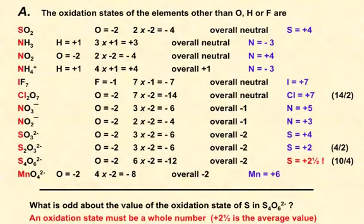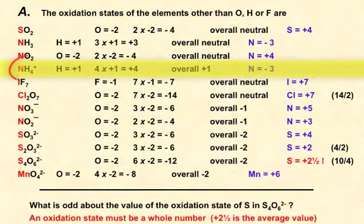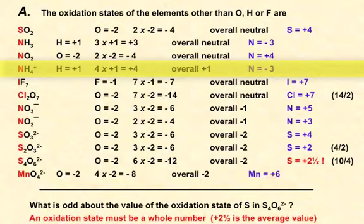For NH4 plus: four hydrogens give a total of plus four for H. If there were no overall charge, nitrogen would be minus four to balance, but we need an overall charge of plus one, so we can't cancel all of that plus four. Therefore nitrogen must be minus three, which leaves us with an overall charge of plus one.